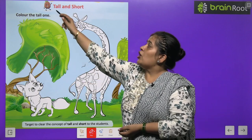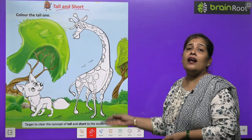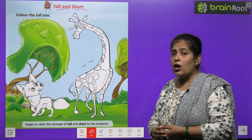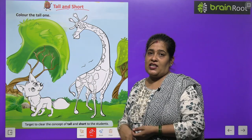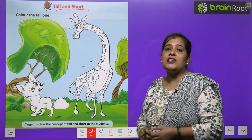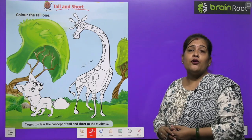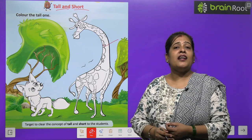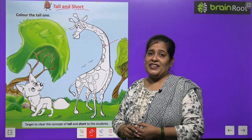First we will differentiate between tall and short. Tall کا مطلب ہوتا ہے لمبا اور short کا مطلب ہوتا ہے چھوٹا. یہاں پر ایک بہت سندر سی پچھر ہے جیراف کی اور فاکس کی. آپ کو اس پچھر میں جو بڑی پچھر ہے اس میں کلر کرنا ہے. جیراف کی پچھر بڑی ہے، تو آپ کو اس میں بہت سندر کلر کرنے ہیں.